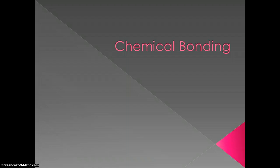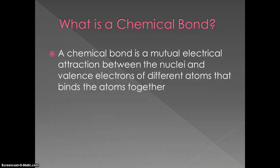In this video we're going to introduce chemical bonding. A chemical bond is a mutual electrical attraction between the nuclei and valence electrons of different atoms that binds the atoms together. Another way to think about this is it's a way that elements will either share or give and take electrons so that they'll be linked to another atom.